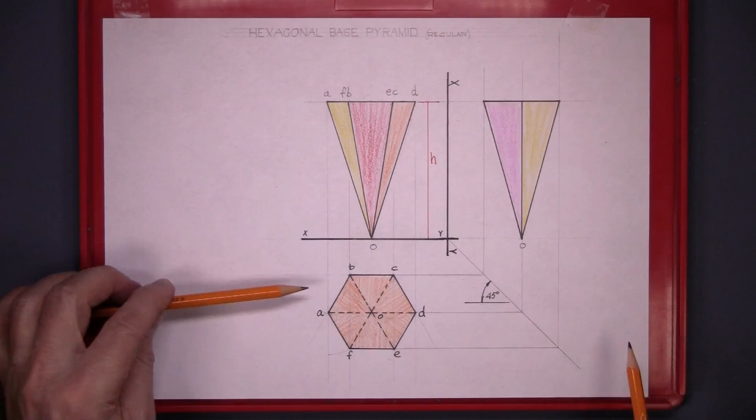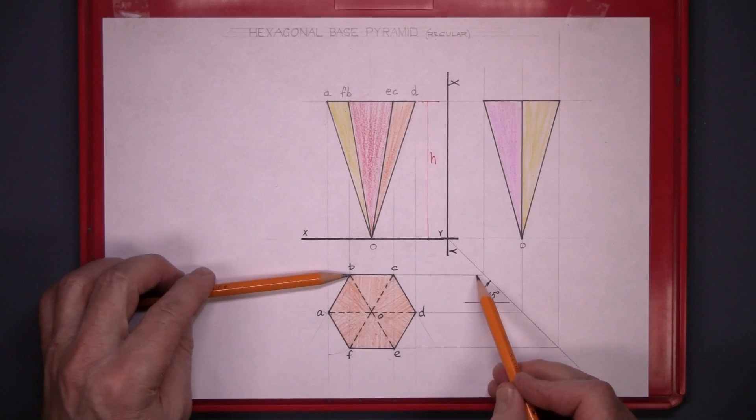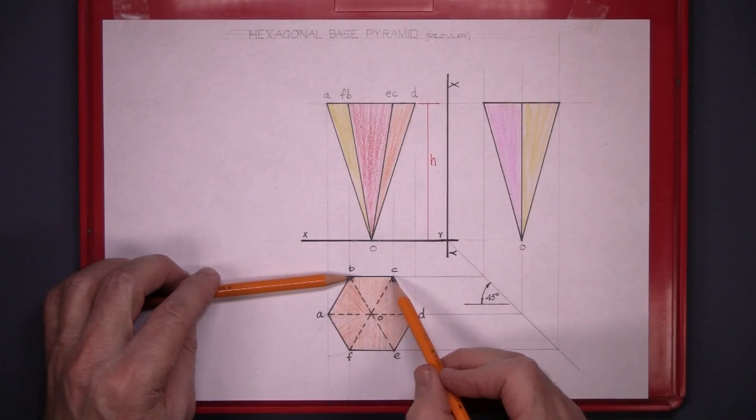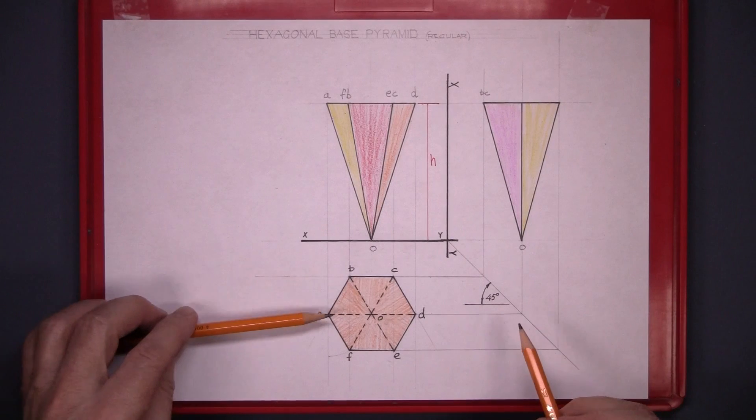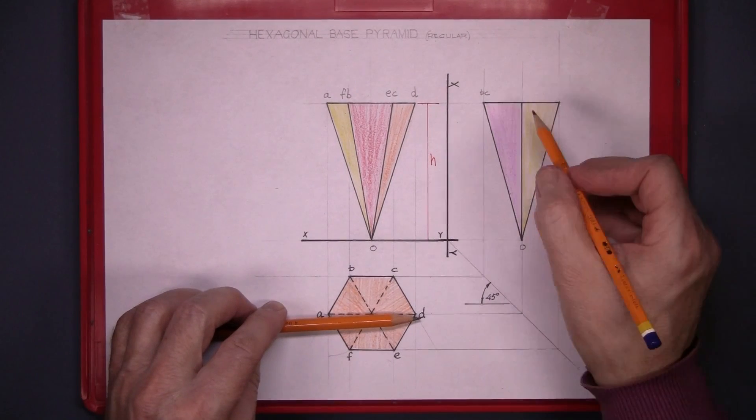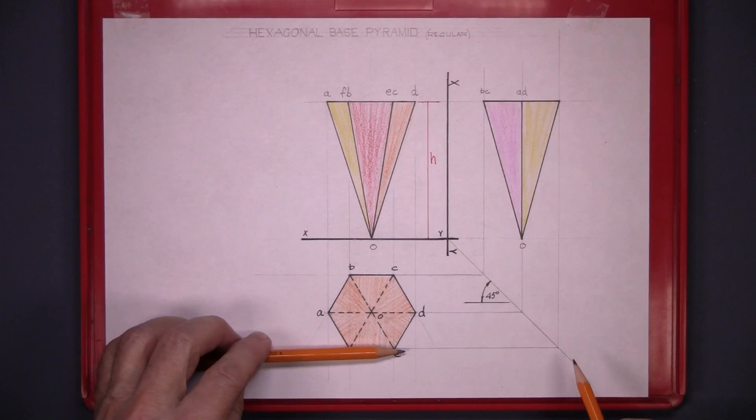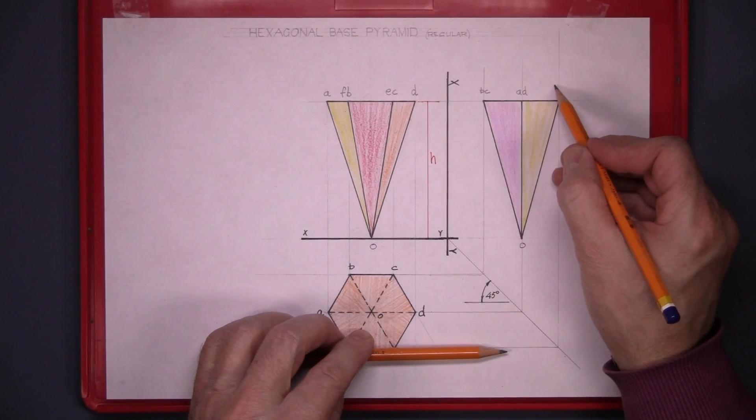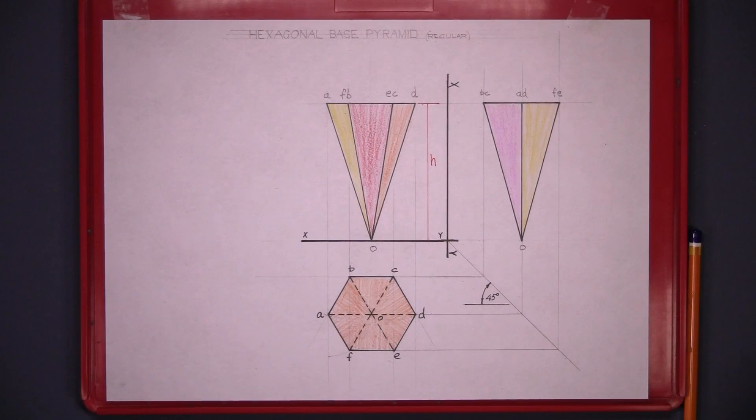We're looking at the left-hand side. These points we have BC. So this point at the top is BC. AD is the middle one. And FE is the one on the right-hand side. And that's that drawing complete.